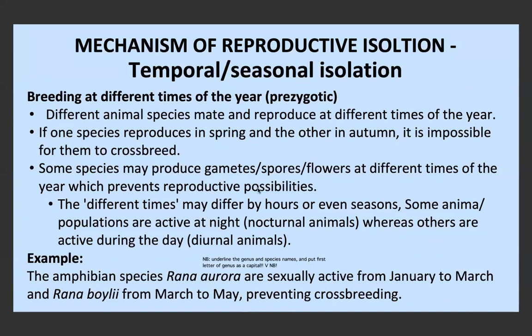Some species might produce gametes, spores, or flowers at different times of the year, which prevents reproductive possibility. It doesn't necessarily have to be different times of the year — it can be different times of the day. Some animal populations are active at night (nocturnal) and some are active during the day (diurnal), so they would not meet and reproduce. An example is the amphibian species Rana aurora, which are sexually active from January to March, and Rana boylii, which are sexually active from March to May — their breeding seasons don't really overlap, so no crossbreeding can occur.